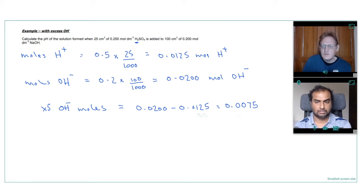0.0200 take away 0.0125. And that would give us 0.0075. So now we need the concentration to work out an extra step for hydroxide ions. Because first of all, we need to work out the H plus. Because all we've got at the moment is the OH minus.